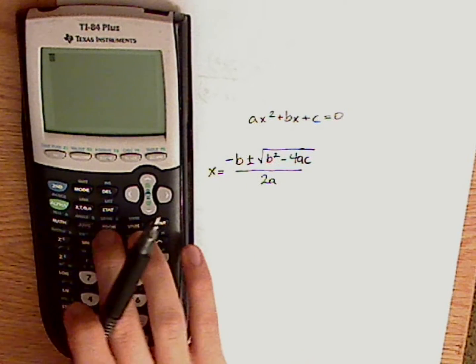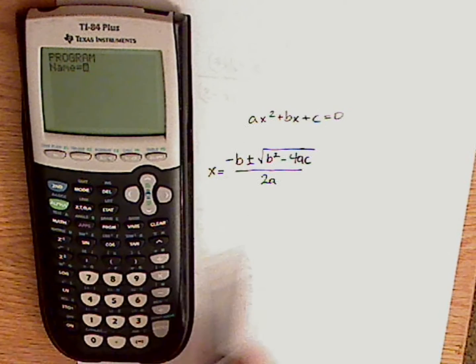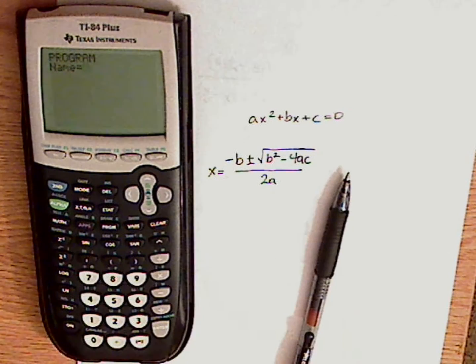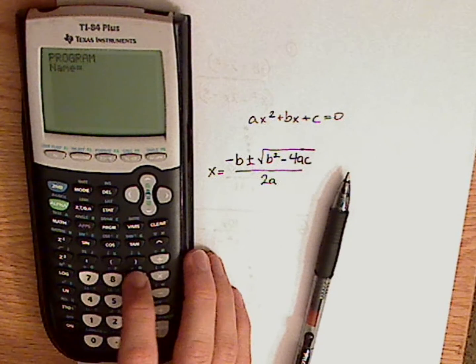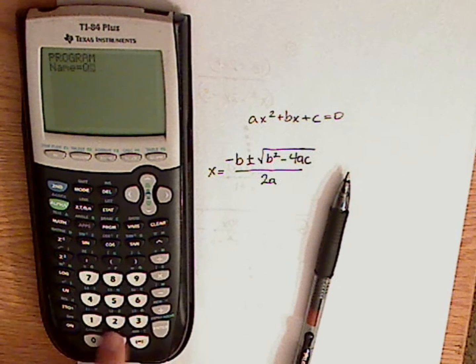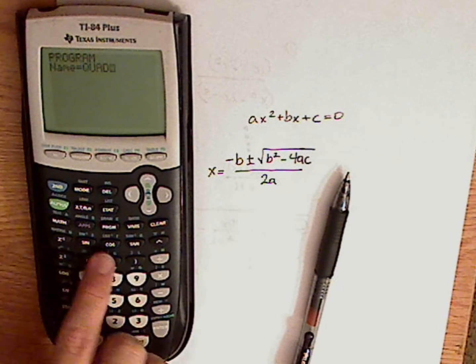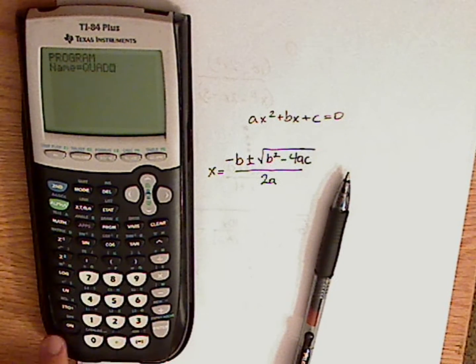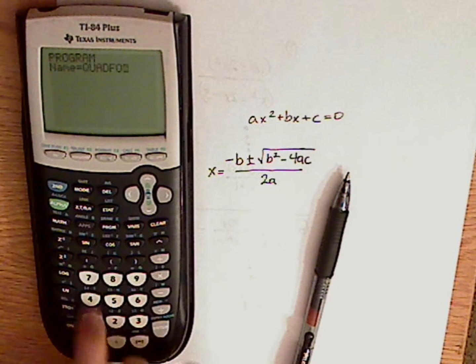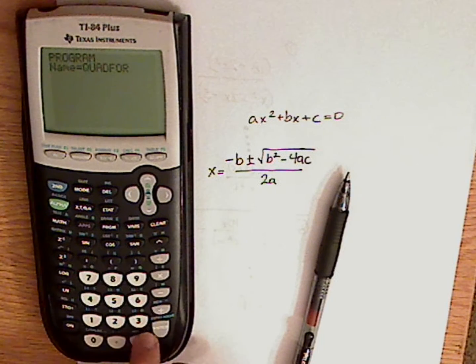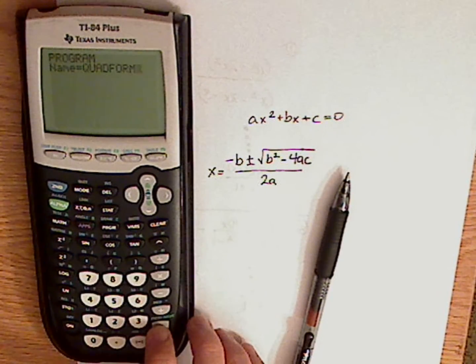Now, to start your program, just go to program, go to new. You can't put any spaces, and I'll just try to make it short enough where you can identify it. So I'm going to put quadform - quad, and I'm just pushing the letters which are the green, and then form, F-O-R-M. There we go, and enter.